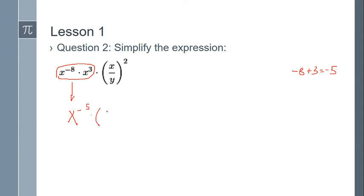Now notice we have the quotient x over y in parentheses. I can't simplify inside since they have different bases, but I can apply the power rule. The implied exponent on both x and y is one, and according to the power rule we multiply the exponents inside the parentheses by the outer exponent. So one times two gives x squared in the numerator, and two times one gives y squared in the denominator.